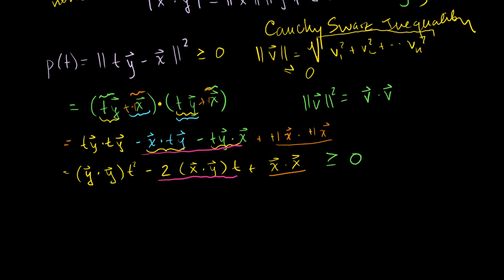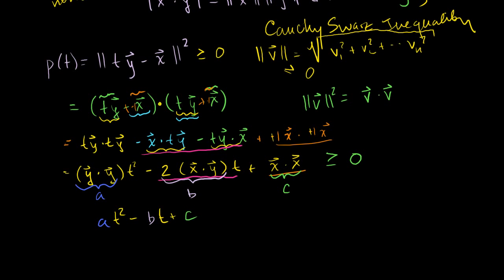Let's make a substitution to clean up the expression. Let a = y · y, b = 2(x · y), and c = x · x. Then our expression becomes at² − bt + c, and we know this is greater than or equal to 0 for any real t we put in.